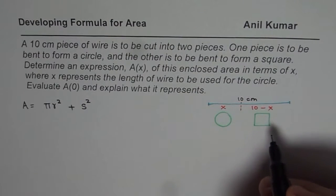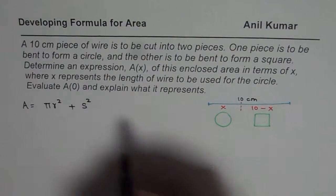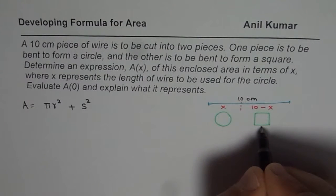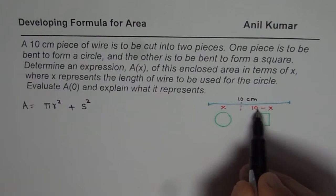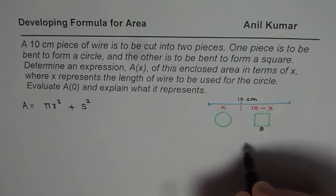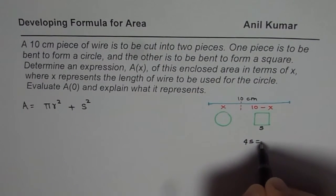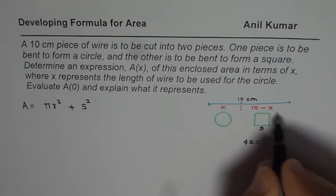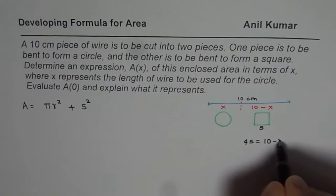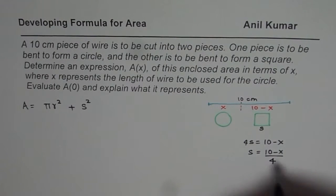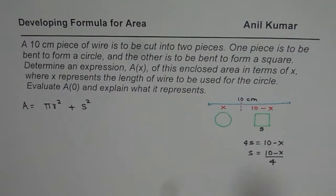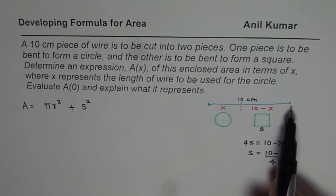Now let's begin to develop the formula. So the side length for the square, we know the perimeter is 10 minus x. We have four sides of the square which sum up to 10 minus x. So clearly side length is (10-x) divided by 4. So that is how we can get expression of side length with respect to the length of the wire.